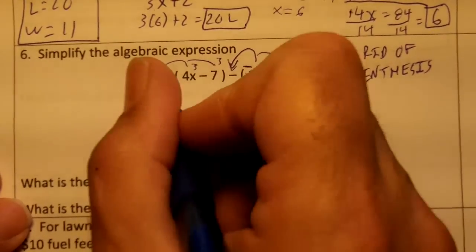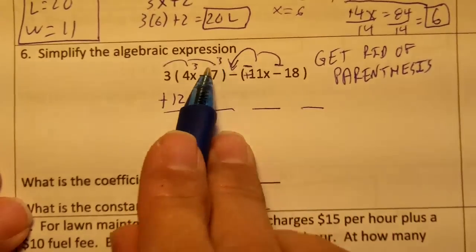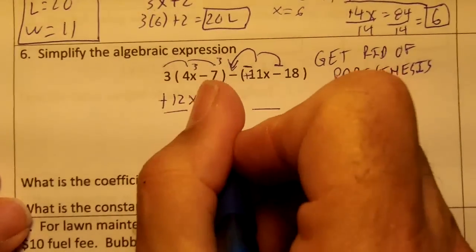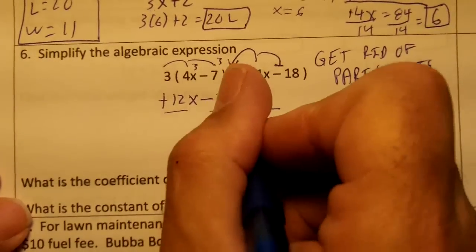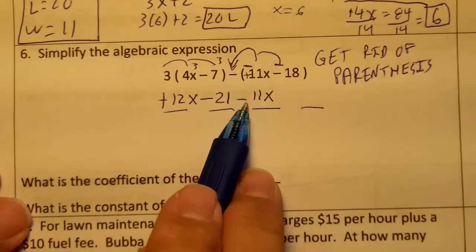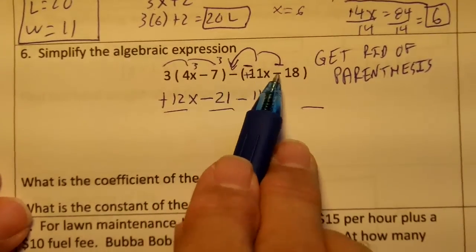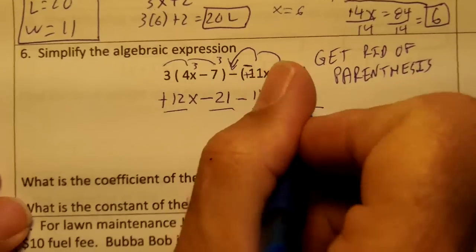3 times 4 is a positive 12 and the letter x. 3 times negative 7 would be a negative 21. A negative times 11x would be minus 11x. Remember that minus is going to switch the positive to a negative. And this minus will switch the negative to a positive. Two negatives make a plus and we have 18.